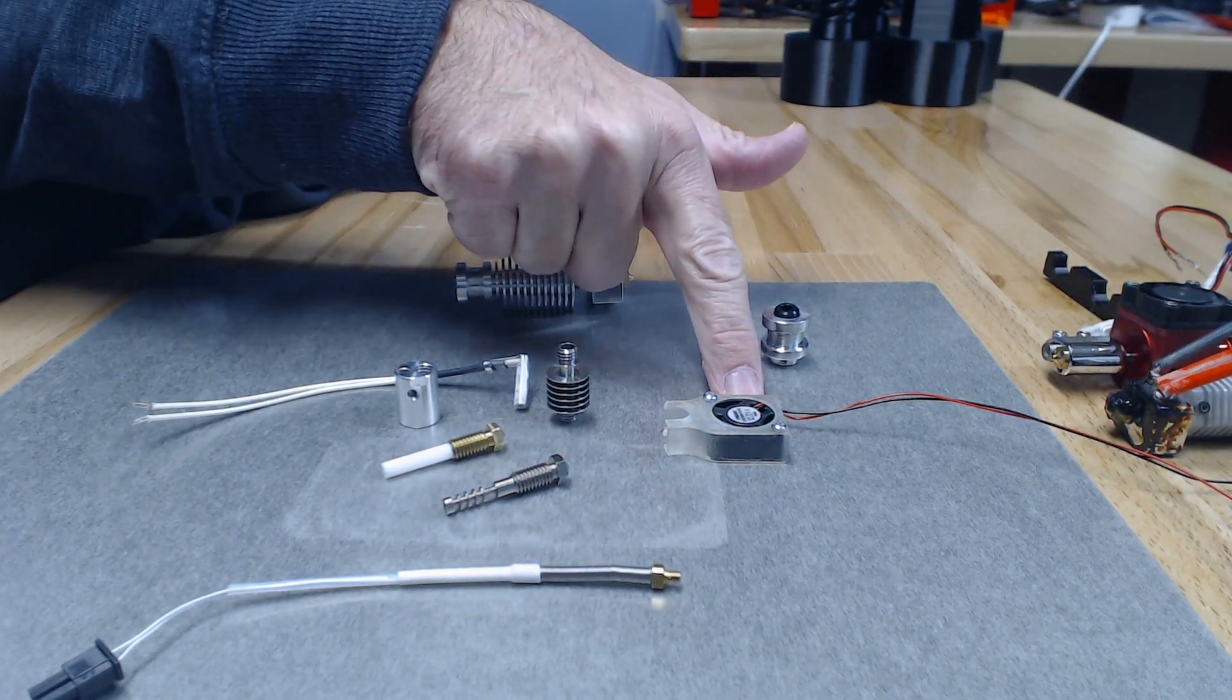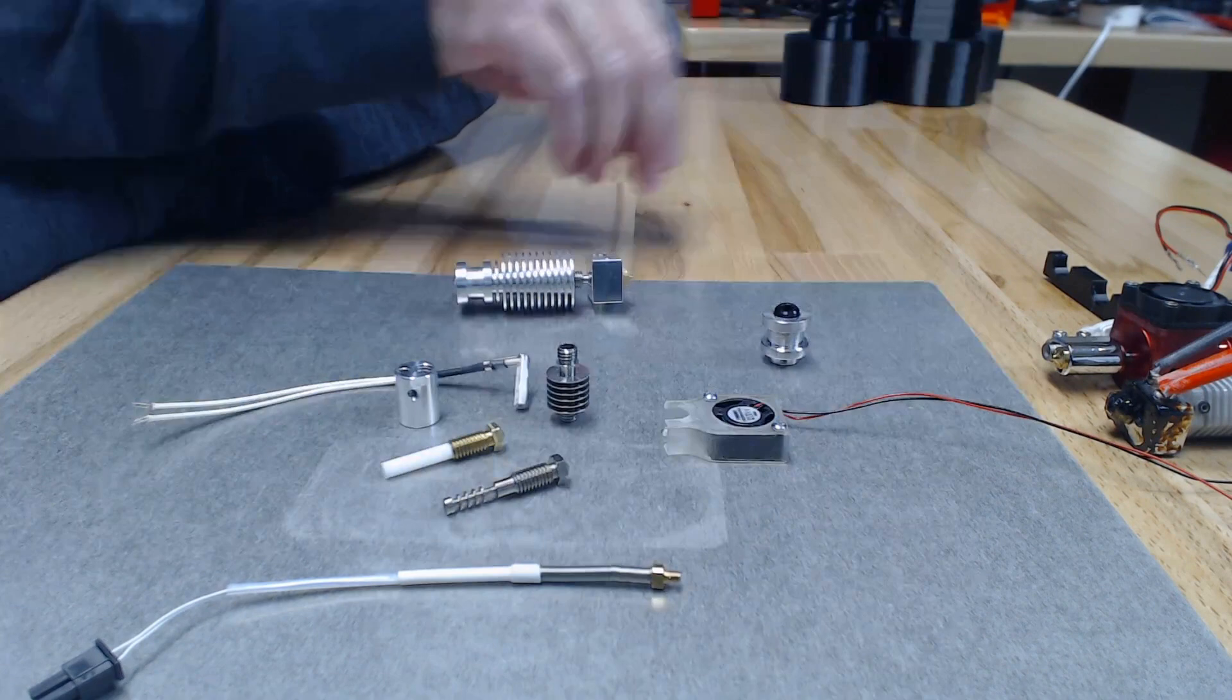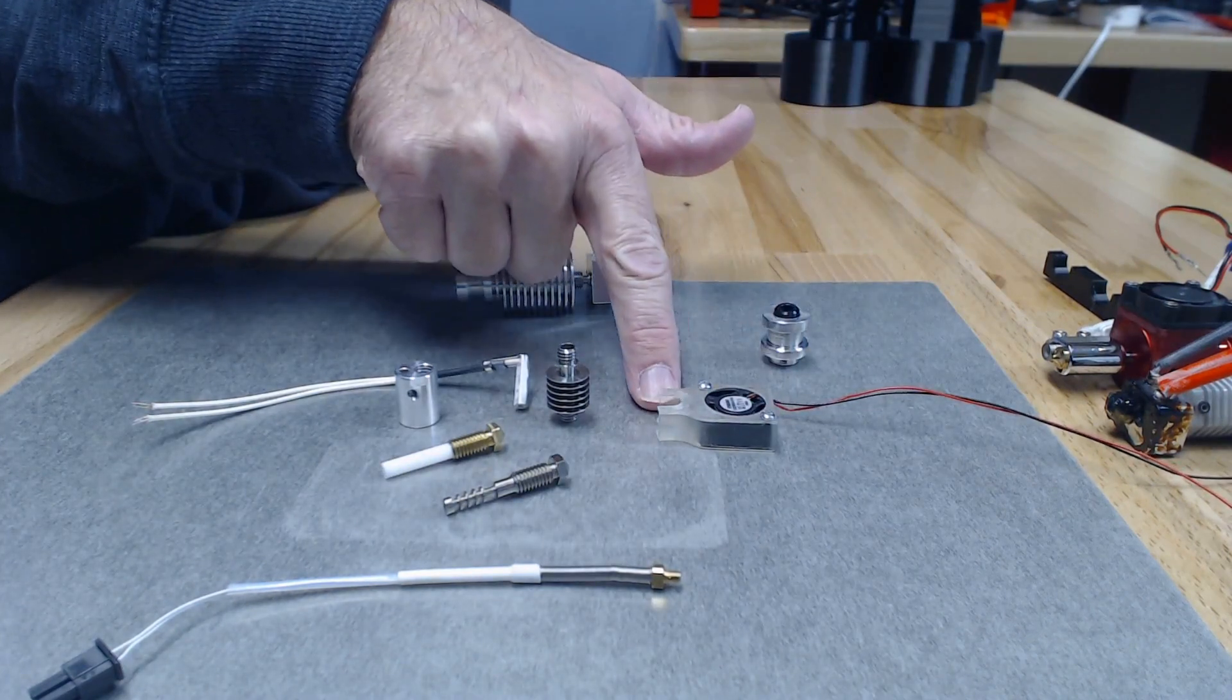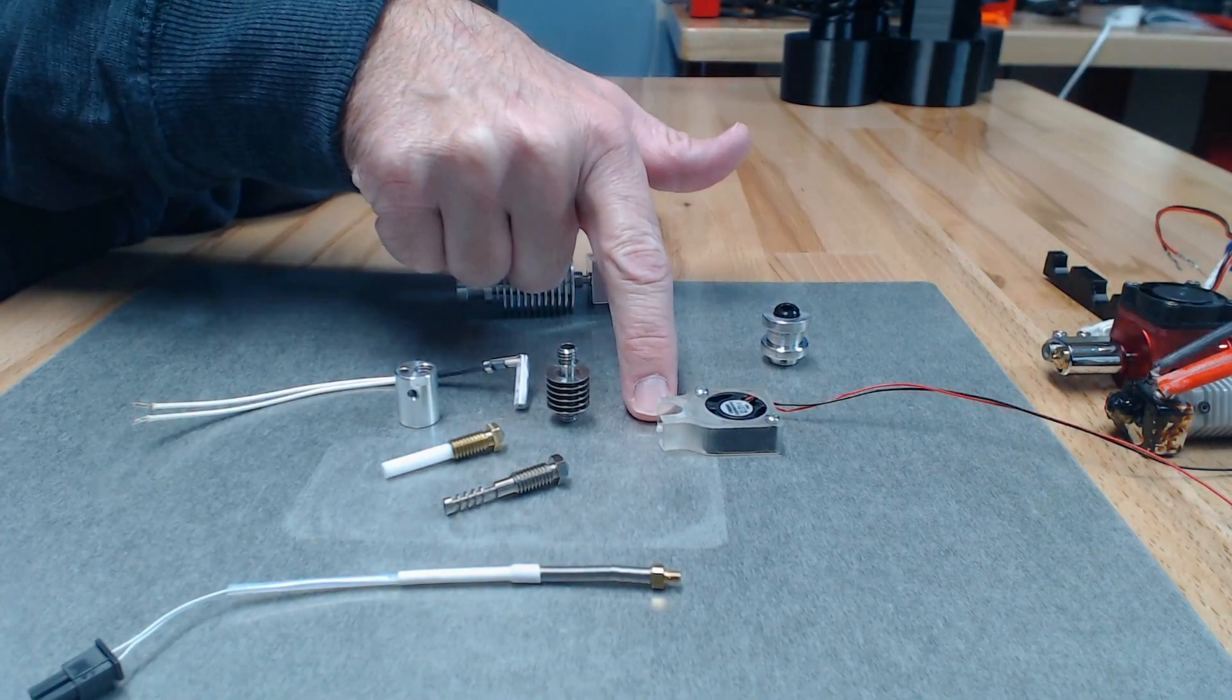It will have its own 5 volt blower motor and this is a pre-production unit, so this particular shroud that they have on it is a little bit different than what you'll see on their website.